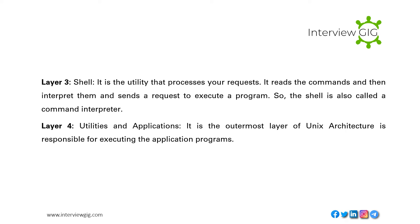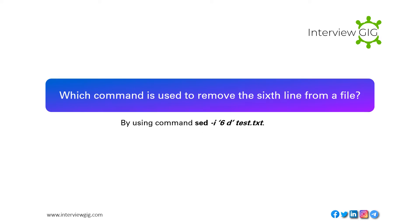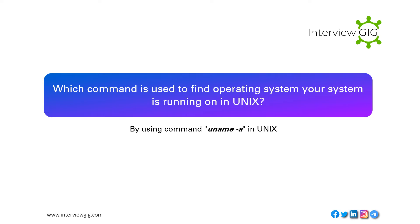Which command is used to remove the sixth line from a file? By using the command: sed -i '6d' test.txt. Which command is used to copy a file from one host to another? By using the scp command, and also rsync and sftp. To find the operating system your system is running on in Unix, use the command: uname -a.